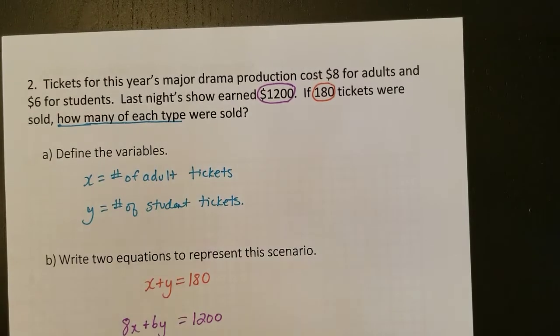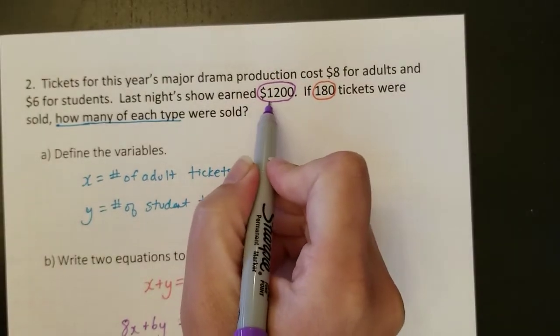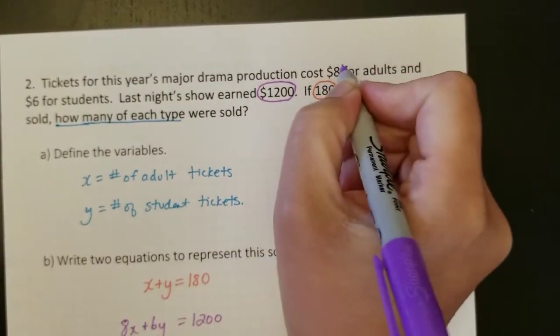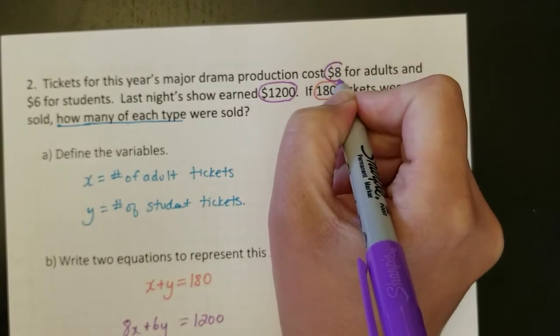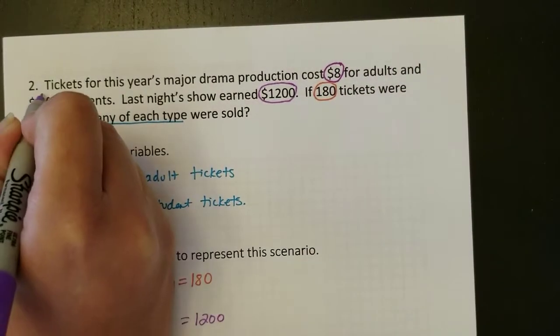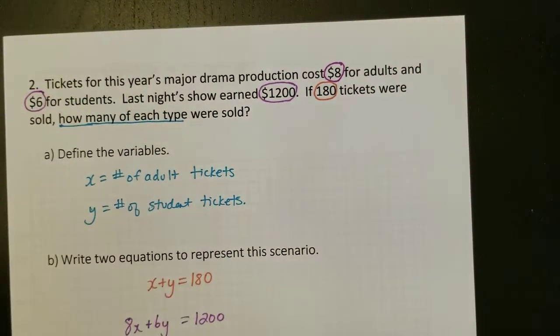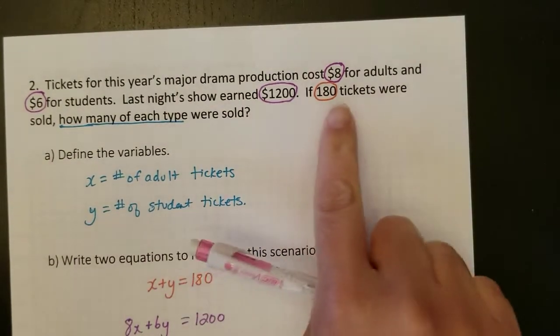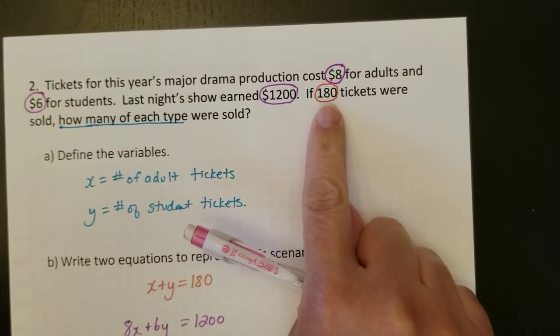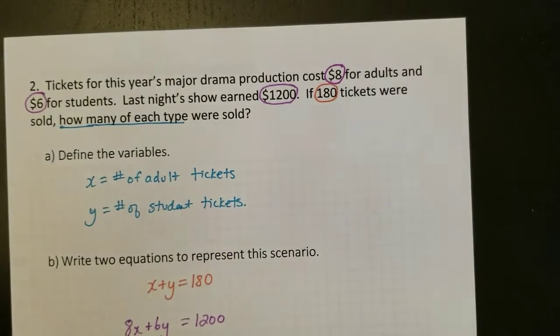So I know that I have some information here about money, this $1,200, and I know that it costs $8 for adults and $6 for students. And then I also have some information, so I've tried to color code it here for you, about how many tickets.